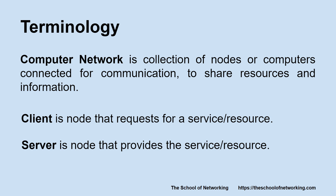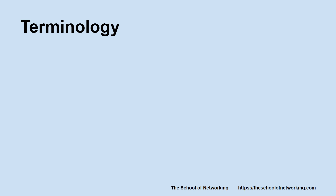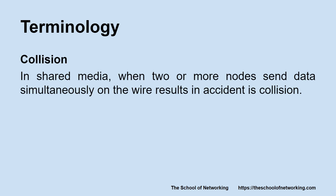What is a collision? In a shared media, when two or more nodes send data simultaneously on the wire, resulting in an accident, it is referred to as a collision. A shared media is a media where you can either send or receive data.